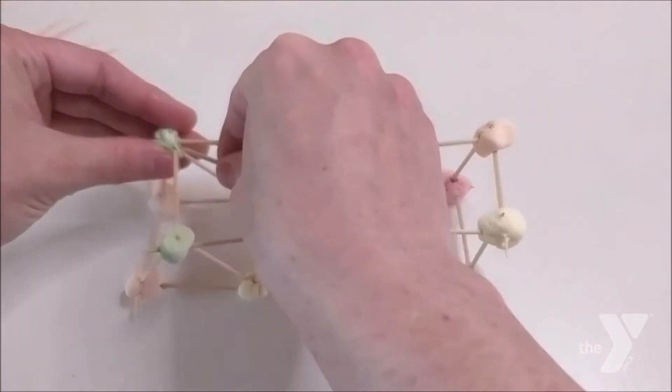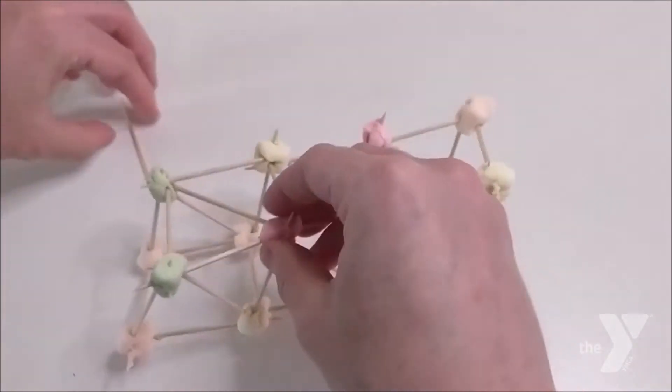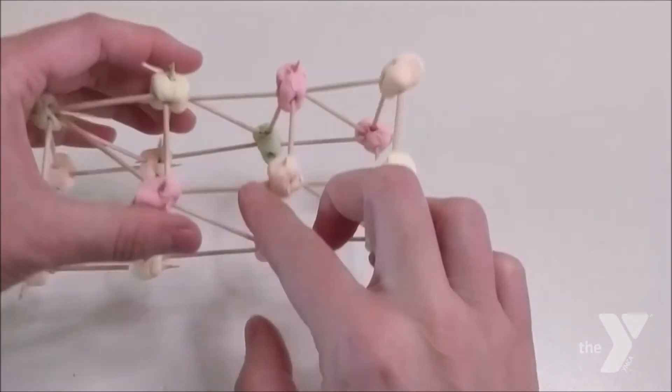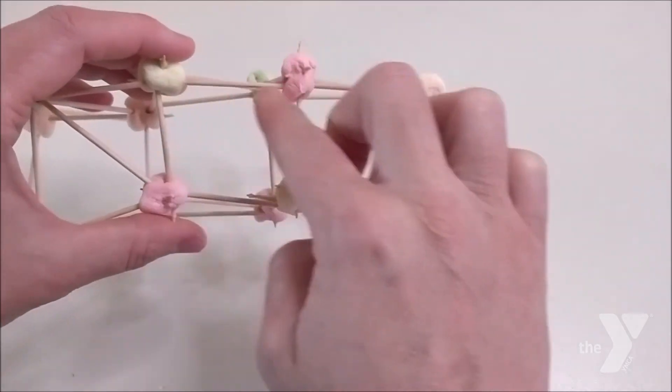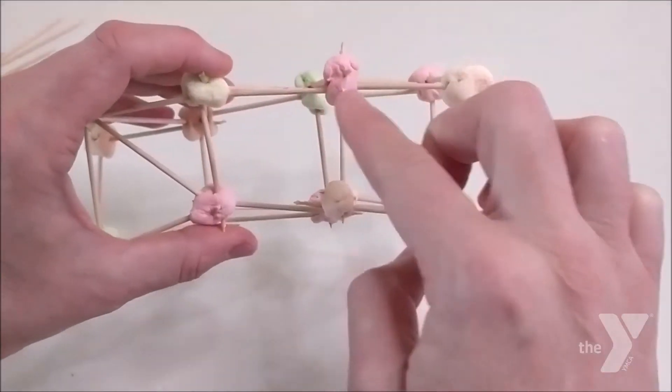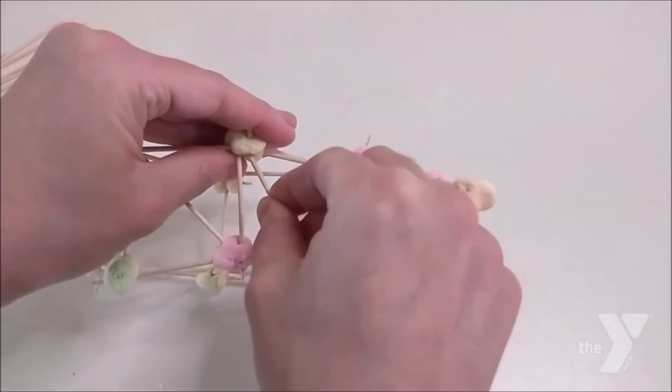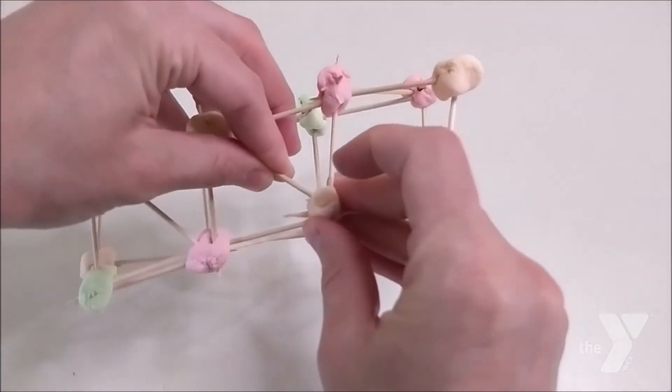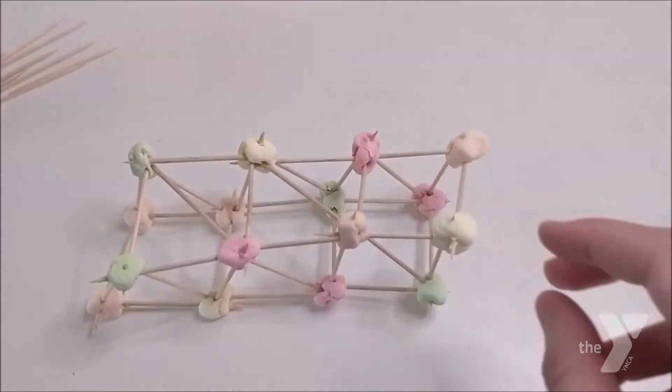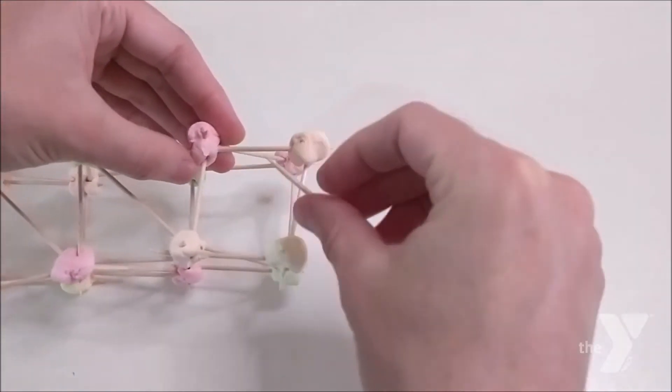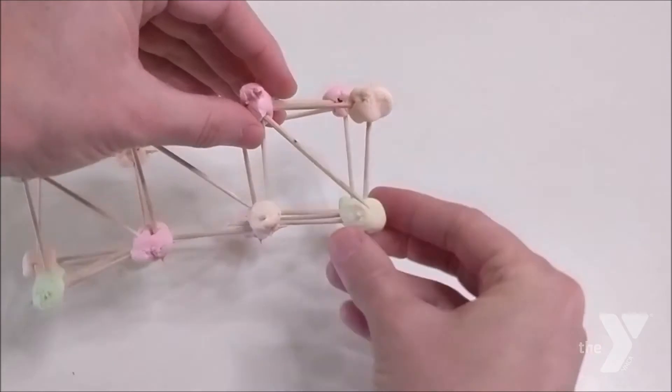So our bridge is definitely more stable now. You can probably feel that. But I'm still seeing some squashiness where we have some squares. So to finish up, let's make it as sturdy as we can. Find every four-sided shape and add a toothpick to make it a triangle. I say four-sided shape instead of square, because at this point, some of our squares may have warped a little bit, but that's okay.